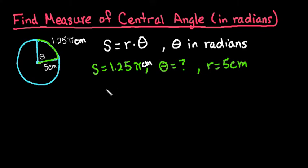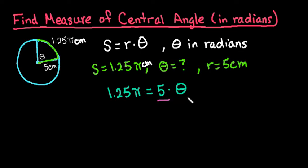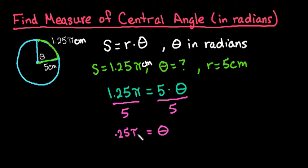Let's plug in our values. We would say that 1.25 pi equals 5 times theta. Simply, all you have to do to solve for theta is divide both sides by 5. So you end up with theta equals 0.25 pi, or if you would rather have this as a fraction, 0.25 is really 1 fourth. So you could say that theta is really pi over 4.